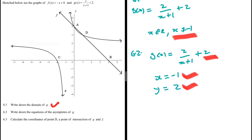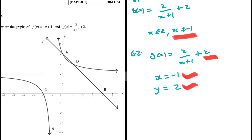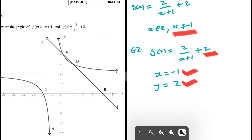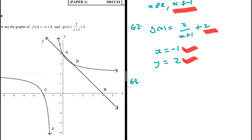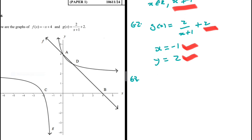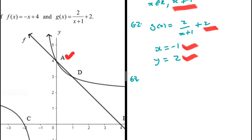For 6.3, we need to calculate the coordinates of point D, a point of intersection of g and f. We have two intersection points, A and D, so we'll get two values of x and then pick the correct one. We want the x-values where f(x) = g(x).